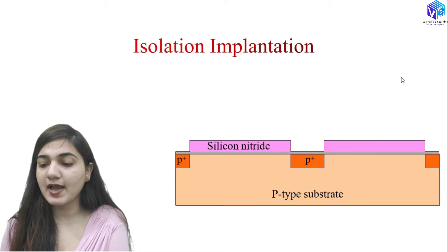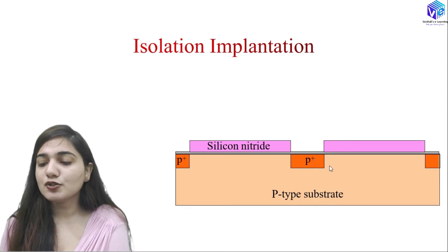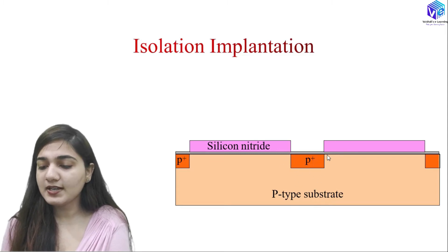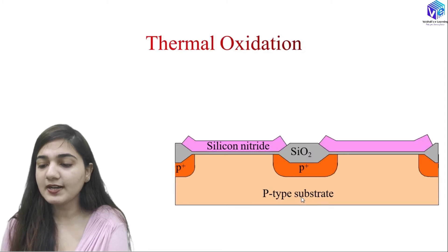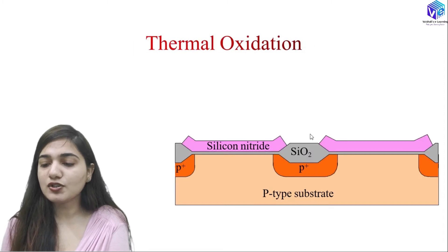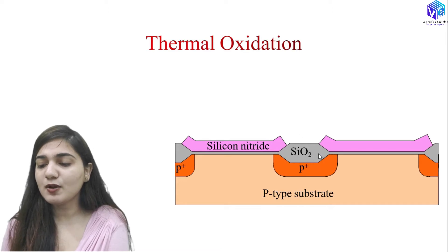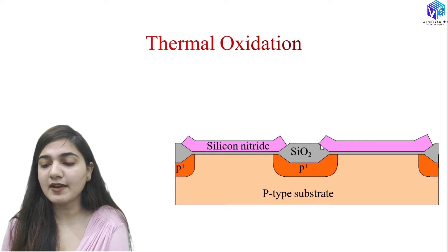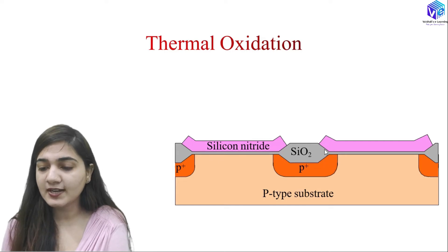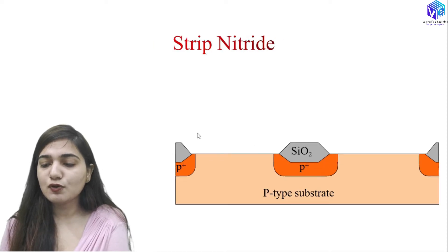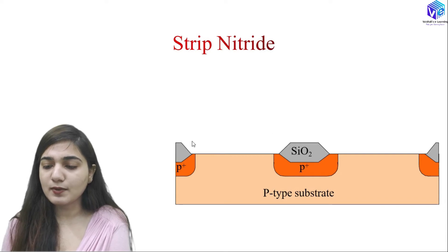After removing the photoresist, we perform the isolation implantation, implanting a p-region using boron to make the isolation implantation in the p-type substrate. Then we perform thermal wet oxidation to form the SiO₂ layer. This creates the bird's beak problem, which we discussed when talking about oxidation. After that, silicon nitride is no longer required and we strip the silicon nitride.